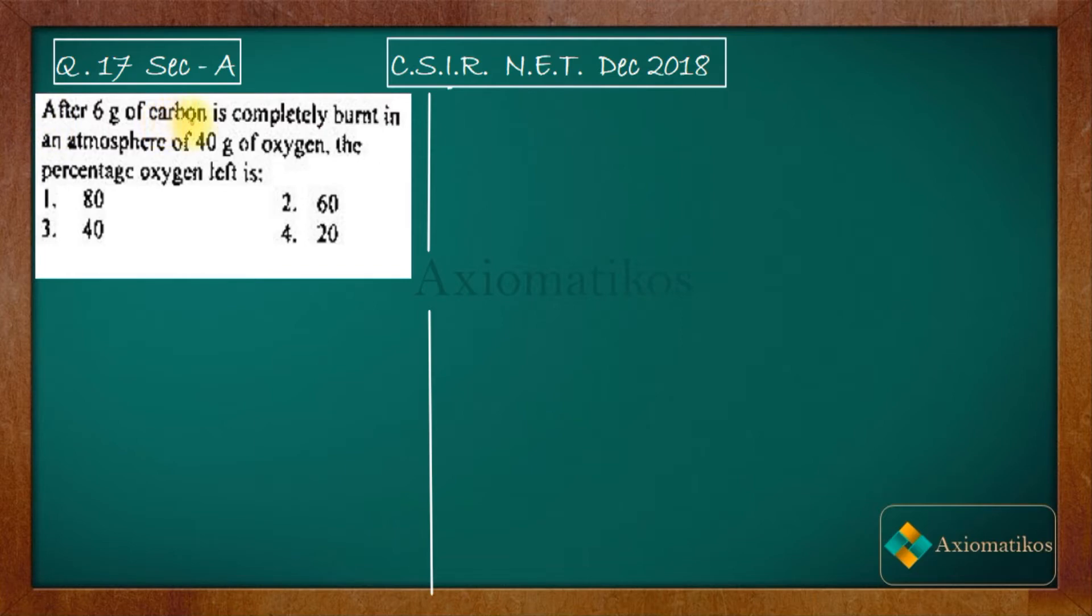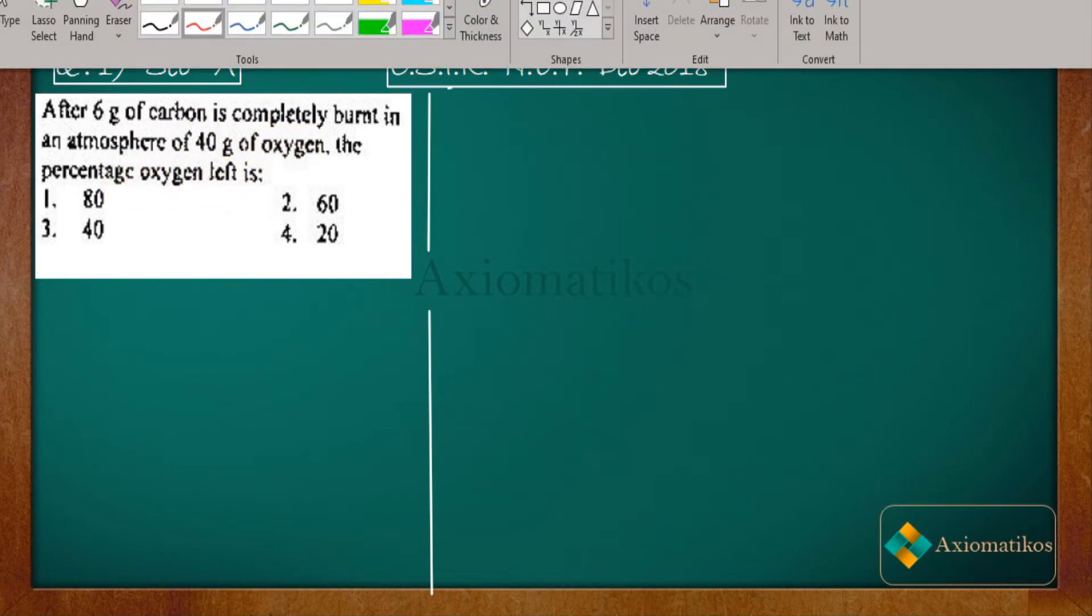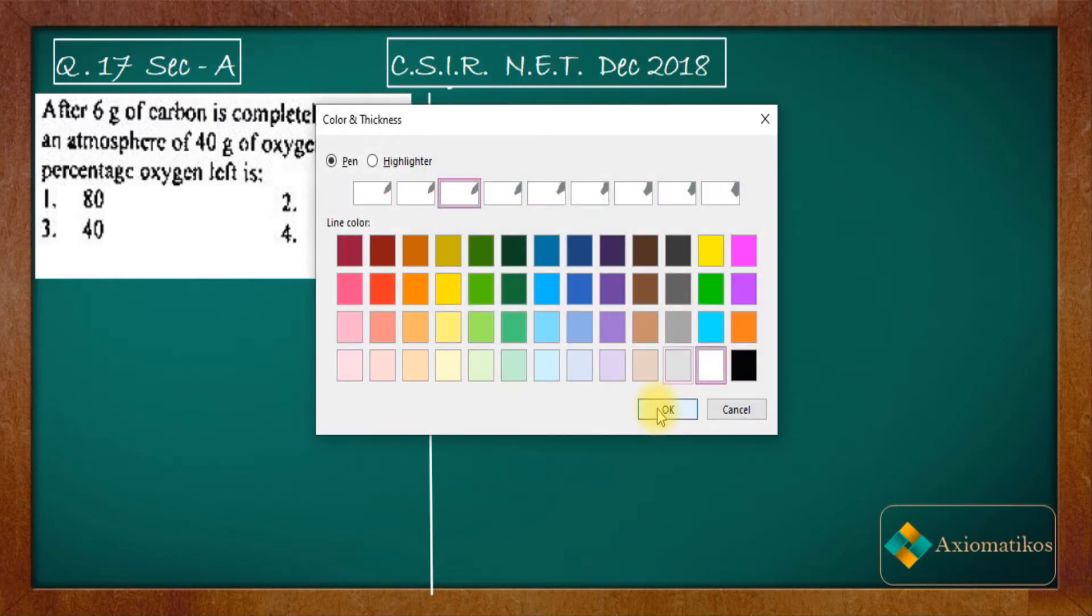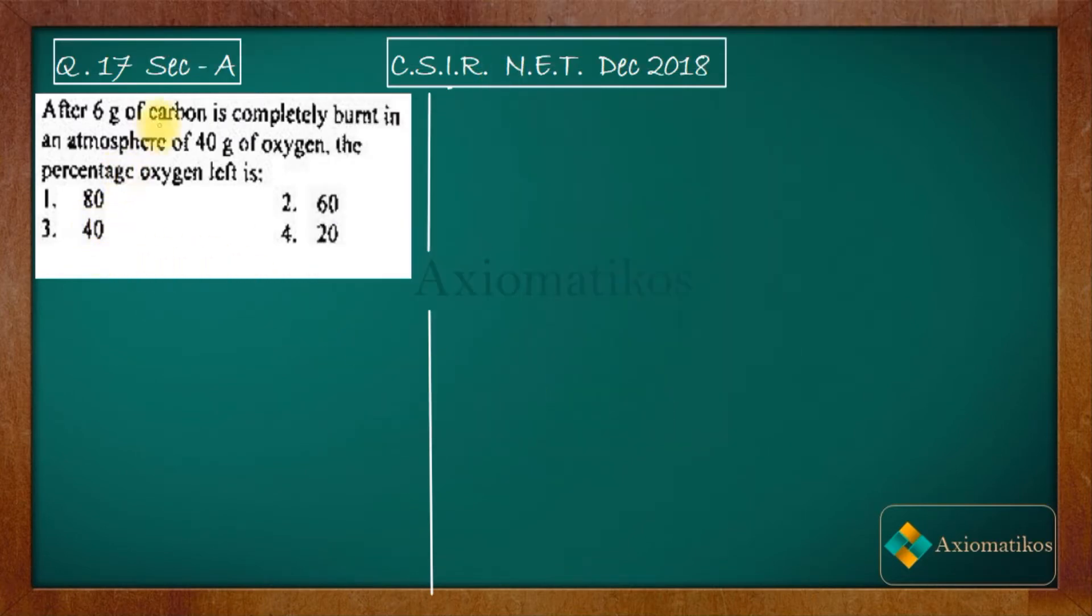After 6 grams of carbon is completely burnt in an atmosphere of 40 grams of oxygen, the percentage of oxygen left is—so you have these options in your hand. It's not actually a question of mathematics, it's a question from chemistry. Now let us try to solve it.